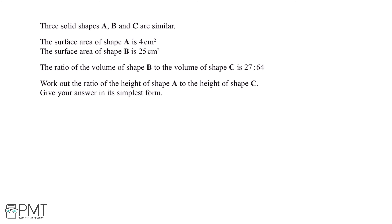In order to work out the ratio of the height of shape A to the height of shape C, we're going to want to work out first the ratio of shape A to B, and the ratio of shape B to C, in terms of length. Starting with the ratio of shape A to B, this is in relation to their surface area and the ratio is 4 to 25. In order to work out the ratio of their lengths, we're going to want to square root these two numbers.